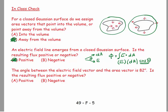And in this case the angle between the electric field vector and the area vector is 82 degrees. So we have our electric field vector and our area vector is 82 degrees. And again it's less than 90 degrees. And so the resulting flux will be positive.